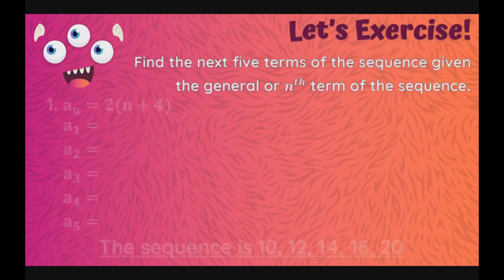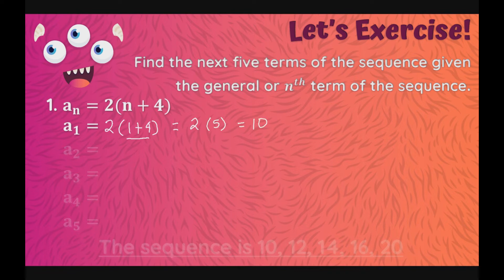Next, hanapin naman natin ang next 5 terms given the general term. We have here general term na 2 times quantity n plus 4. Ang ating a sub 1 will be 2 times 1 plus 4. And 2 times 1 plus 4 is equal to 2 times 5. Unahin natin yung nasa loob ng parenthesis as always. So, magiging 2 times 5 is 10.